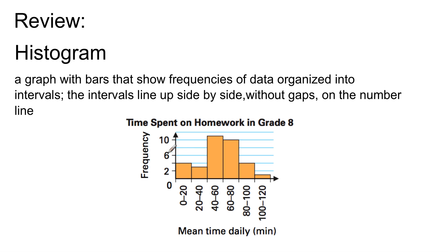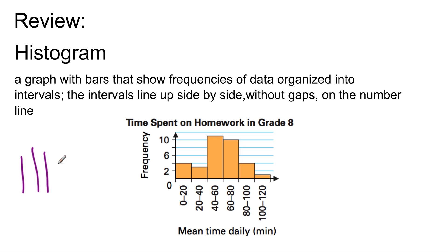The frequency represents how many students fall in each interval. So here, spending 0 to 20 minutes on homework, there are 4 students. Instead of showing each individual student's time separately — this student had this much time, that student had that much — all 4 students are grouped together into one bar.